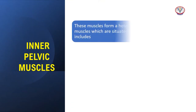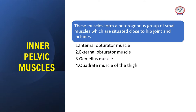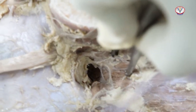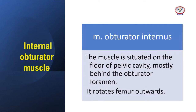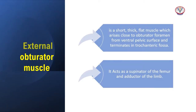The inner pelvic muscles form a heterogeneous group of small muscles situated close to the hip joint and include the internal obturator muscle, external obturator muscle, gemellus, and quadratus femoris. The internal obturator muscle is situated on the floor of the pelvic cavity, mostly behind the obturator foramen, and it rotates the femur outwards. The external obturator is a short, thick, flat muscle which arises close to the obturator foramen from the ventral pelvic surface and terminates in the trochanteric fossa; it acts as a supinator of the femur and adductor of the limb.